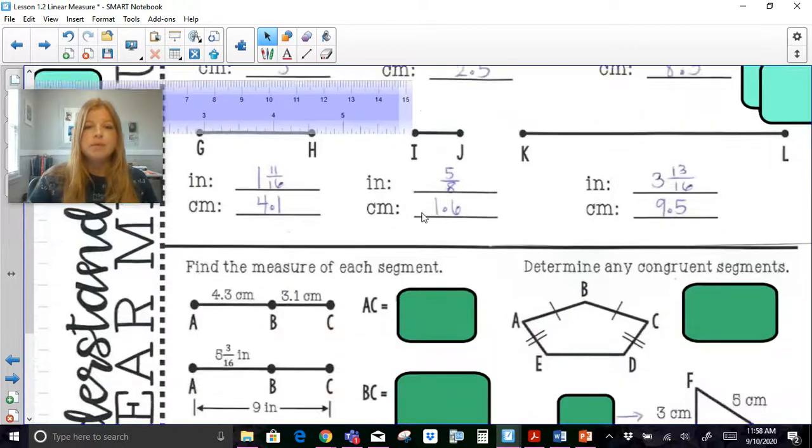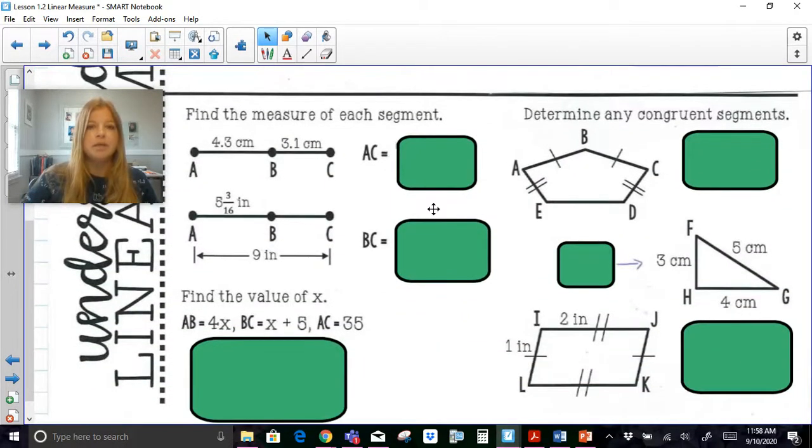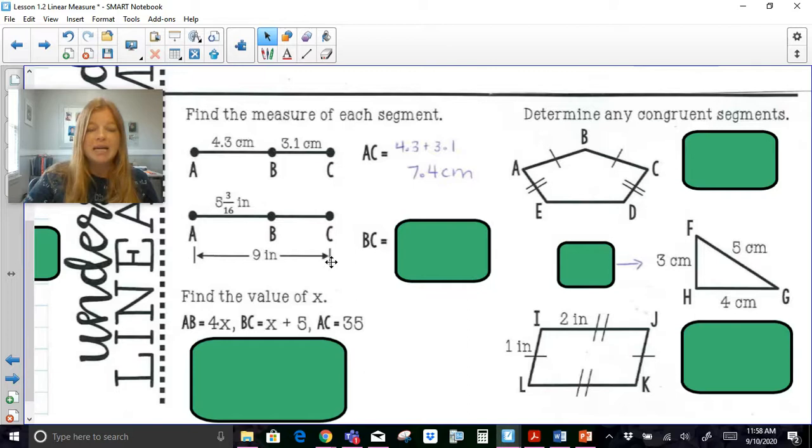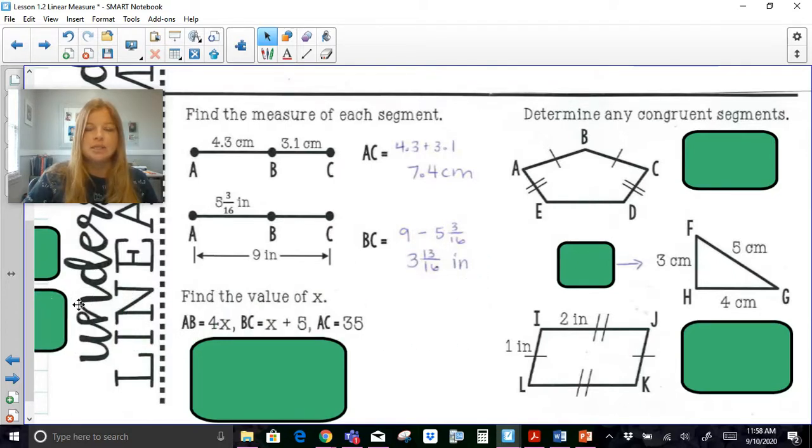So now let's take a look here. It says find the measure of each segment. So AB is 4.3, BC is 3.1, so AC would be to just find the sum of those two, so AC is 7.4 centimeters. I would simply add them up to get my full length so part part equals the whole. This one here, find the measure of BC, so here it's noted that 9 inches is the entire length, that's the whole. My part is this 5 and 3/16 inches, so I would need to do the whole minus that part. So 9 minus that 5 and 3/16 would give me 3 and 13/16 inches.